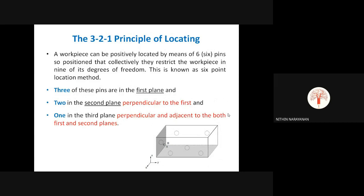One of the most important principles used for locating is the 3-2-1 principle of locating — this is a very important exam topic. A workpiece can be positively located by means of six pins positioned so that collectively they restrict the workpiece in nine of the degrees of freedom. This is known as the 6-point location method.